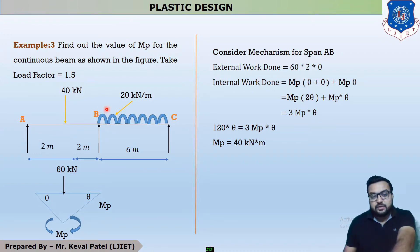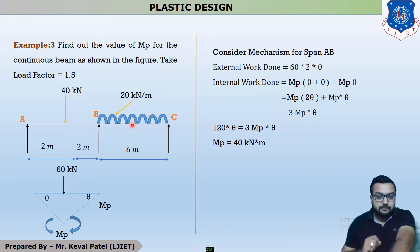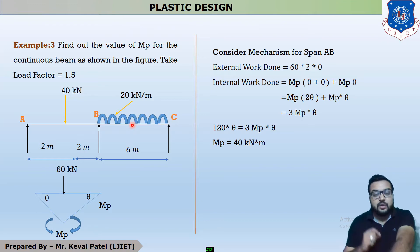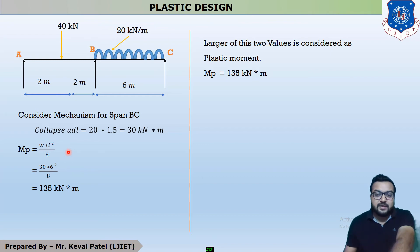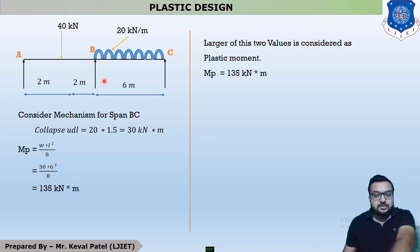For the second span, this is Case 8, so we use the direct equation: MP = wL² / 11.656. Students should note there may be some calculation mistakes; please recheck using a calculator. This is the end of today's session. Thank you.